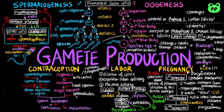Spermicides, diaphragm, and progestin can prevent sperm movement through the female reproductive tract. The morning-after pill and intrauterine device or IUD can interfere with fertilization and implantation. In men, vasectomy is the cutting and tying off of each vas deferens to prevent sperm from entering the urethra, similar to tubal ligation in women.